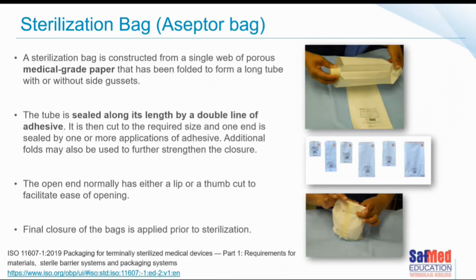A sterilization bag — for example a Septo bag — is constructed from a single web of porous medical-grade paper, folded to form a long tube, available with or without gussets. A gusset makes the bag able to open wider for broader items. The tube is sealed along its length by a double line of adhesive, then cut to the required size. One end is sealed by adhesive, and additional folds are used for further strengthening the closure — corner, corner, fold over, fold over, fold over. The open end sometimes has a lip to facilitate ease of opening, and the final closure is applied prior to sterilization.